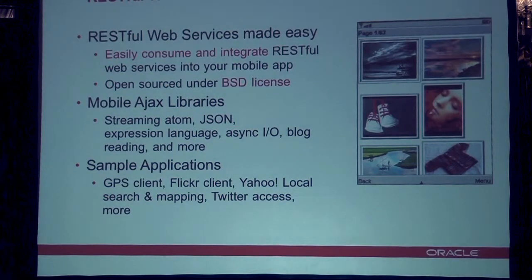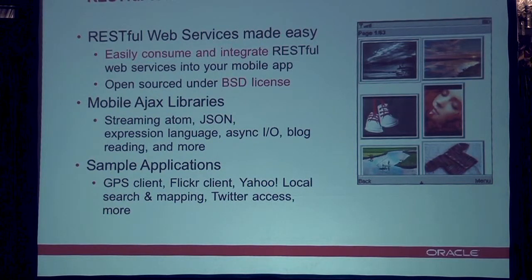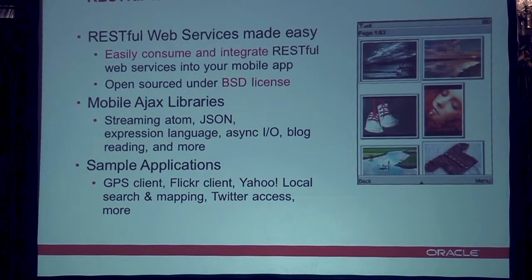We'll talk about two more pieces of this sample application. What we want to do is replicate some of the cool networking social mashup functionality that you see on some of the smartphones. So one thing we definitely need to do is consume web services — Google Maps, Yahoo local business search, Twitter, you name it. You could do that manually and write all that code, but there is a library called Mobile Ajax for Java ME. It's a number of libraries and some sample applications that allow you to consume web services like Twitter or Flickr, Yahoo, and other things very easily.